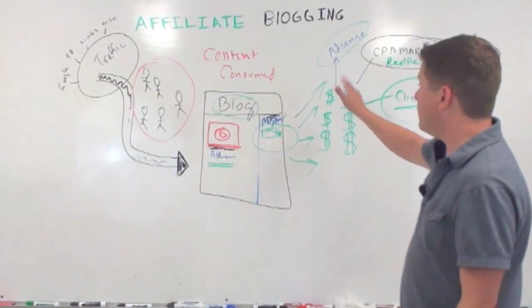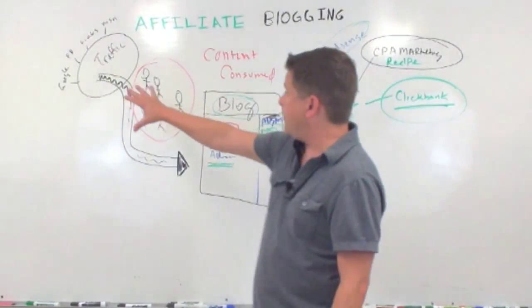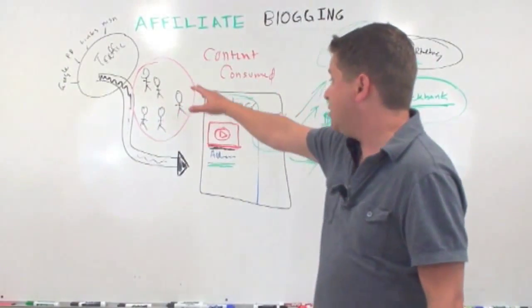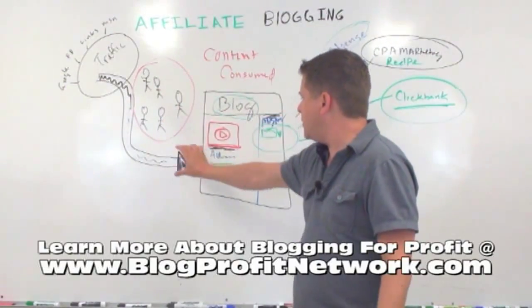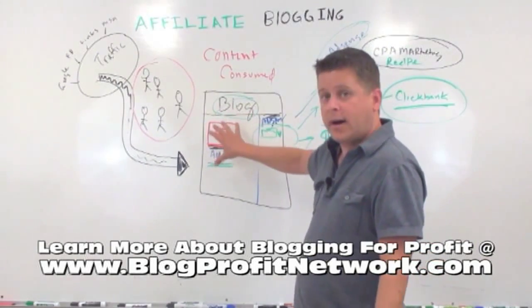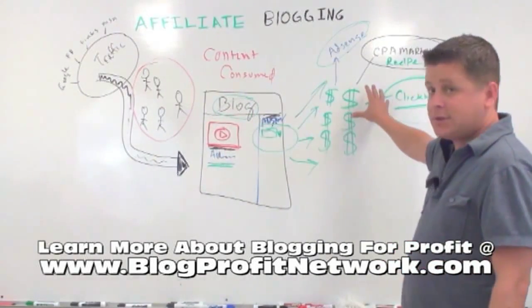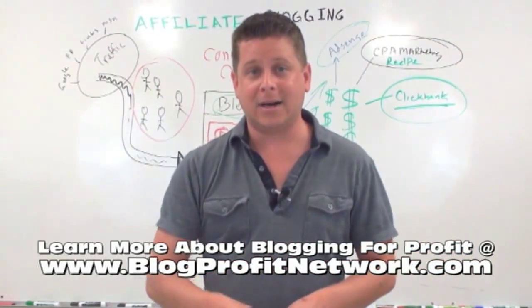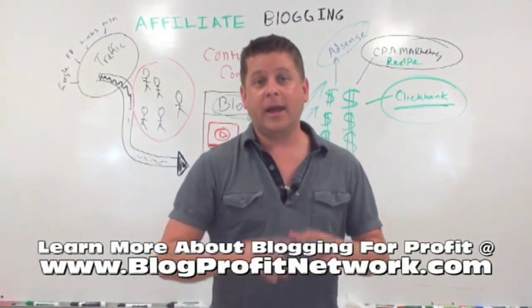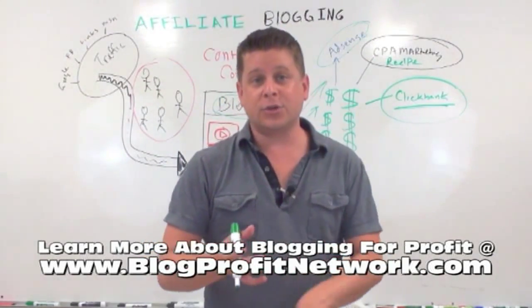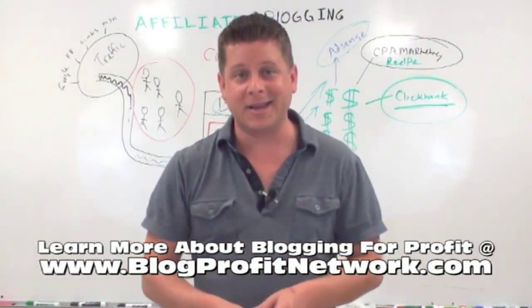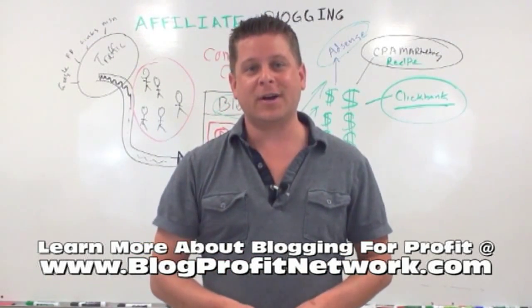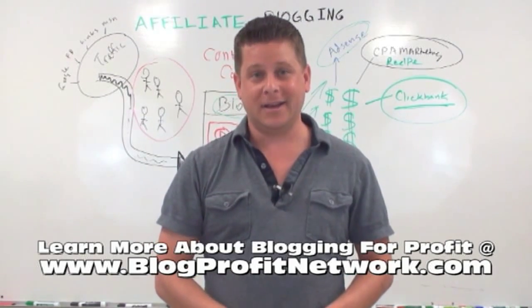So that's a basic overview of affiliate blogging. You get your traffic — whatever you do, Facebook, Google, ads, paid traffic — you get those people to your blog, you get them to consume your content, and then you link them to what makes you money. Go to blogprofitnetwork.com — click the link below if you're watching this on YouTube. Tons of webinars, tools, tricks, plugins, and everything to help you make money online blogging. Thanks again for watching. I'm Marcus. Visit the site and I'll see you in the next video.